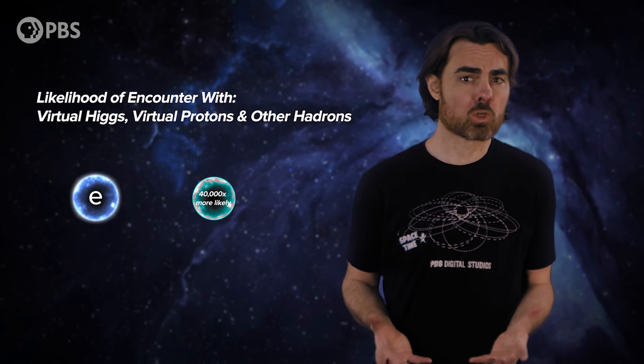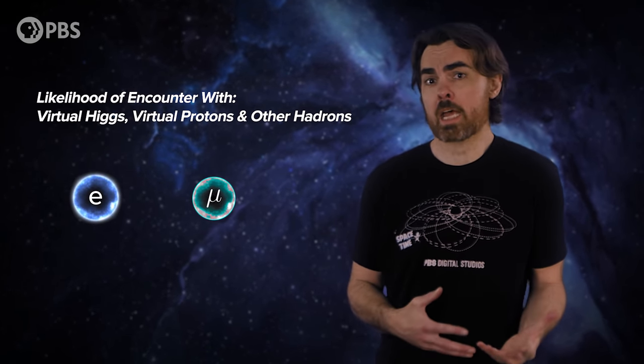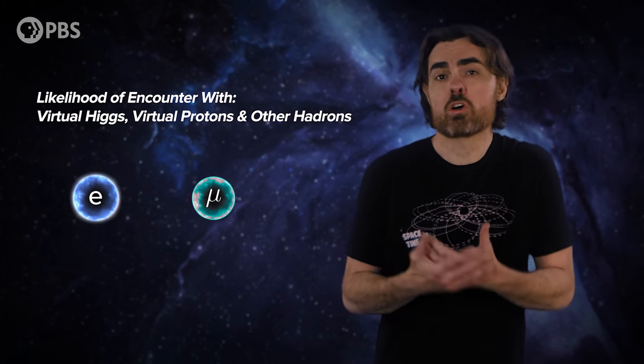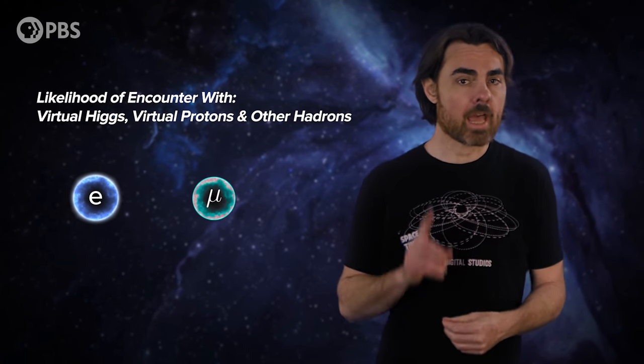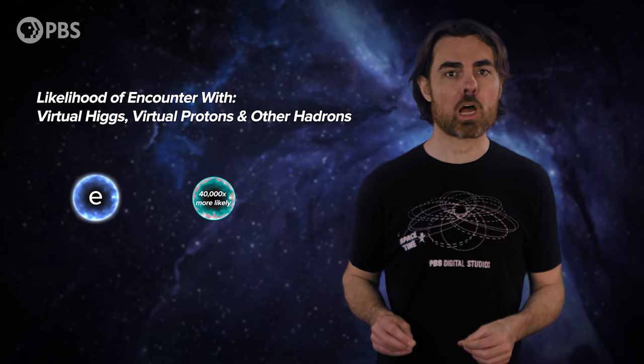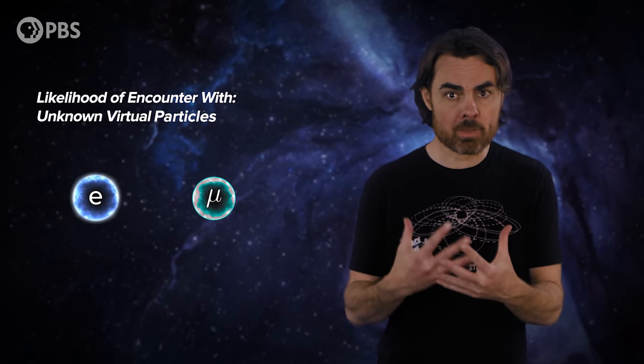So the muon is 40,000 times more likely to be perturbed in this way. It's 40,000 times more likely than the electron to encounter, say, a virtual Higgs boson, or a virtual proton or other hadron.